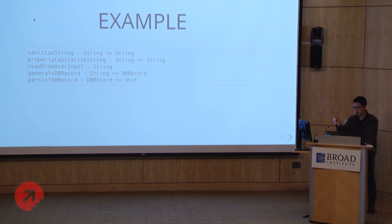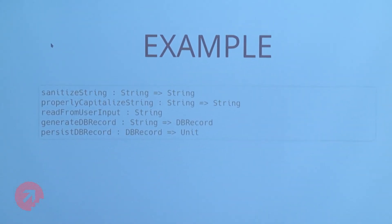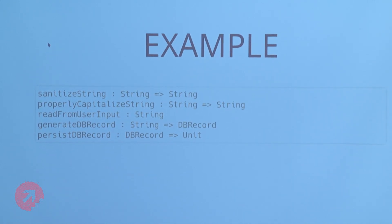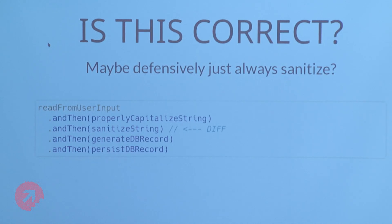Here's an example — a simplified CRUD API's create part. You take user input as a string, sanitize it, properly capitalize it, generate a database record, and persist it. Imagine you're a developer reusing existing code scattered across different modules to make a new pipeline. One simple approach: read from user input, properly capitalize it, generate a database record, and persist it. The compiler won't complain, but — thinking back to app security from earlier today — you're not sanitizing anything. A defensive programming approach says: always sanitize right before you generate the database record, because you can't trust what the input to your function is.